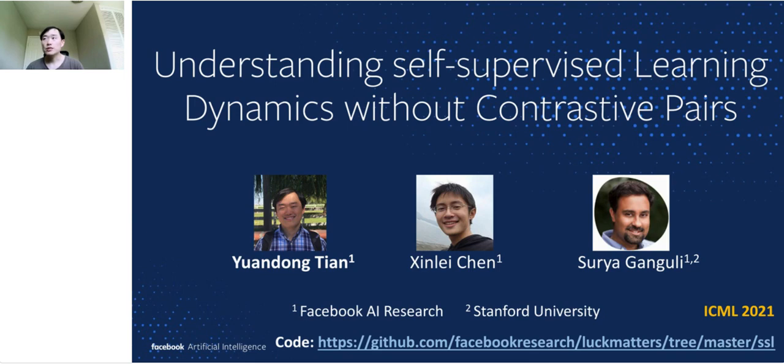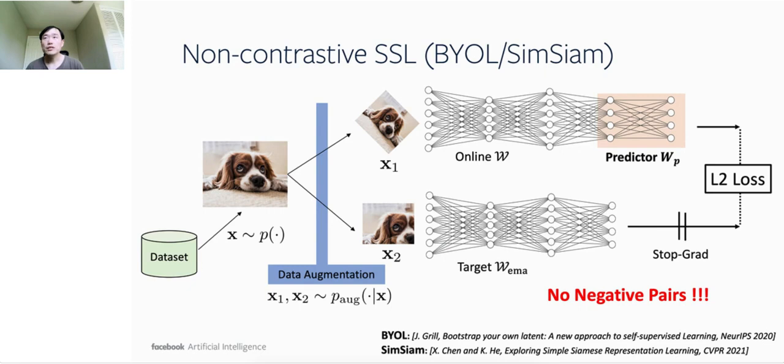This is a joint work with Xinlei Chen, also from Facebook AI Research, and Surya Ganguly from Stanford University. In recent years, self-supervised learning learns representation from data augmentation without relying on carefully labeled datasets, and has achieved strong empirical performance in many applications, including natural language processing, speech, and computer vision. This circumvents the limitation of expensive dataset labeling by humans and opens the door of using massive unlabeled data to further improve our existing AI systems.